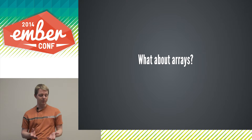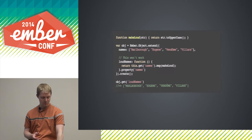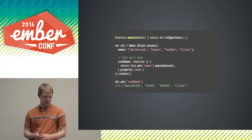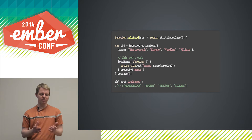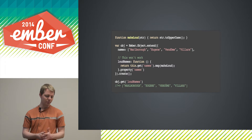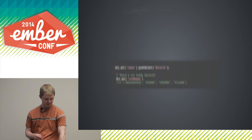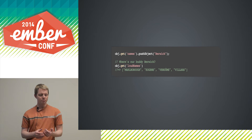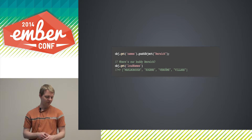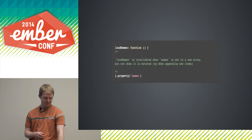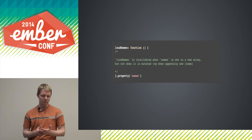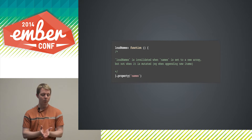This makes sense for single values, but what do we do about arrays? You might just try to do the very same thing — here is the same example where we have a computed property that returns an array of loudNames that depends on an array of names. But this won't actually work. If we mutate the array, nothing gets changed. We add Berwick to our list of people and he doesn't show up. The reason is that the computed property will be completely invalidated when the dependent property is replaced, but not when it's mutated.